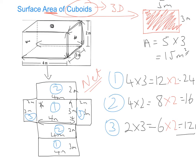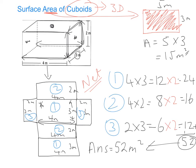To finish off, we're going to add those up: 24 plus 16 plus 12 gives 52. But I need to make sure I always write in the correct units, so the answer is 52 metres squared.